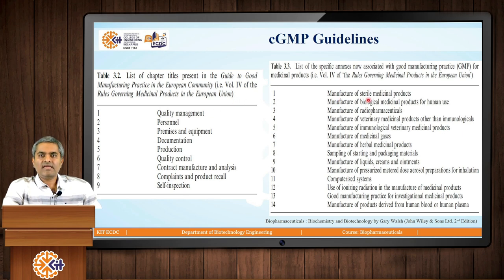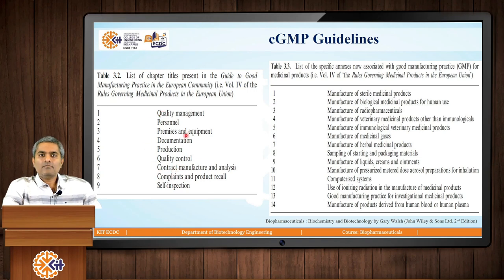These CGMP guidelines are given for different types of products such as medicinal products, radiopharmaceuticals, medicinal gases, herbal medicinal products, creams, ointments, etc. As you can see in this diagram, these CGMP guidelines cover quality management, personnel, documentation practices, quality control, production, and self-inspection.